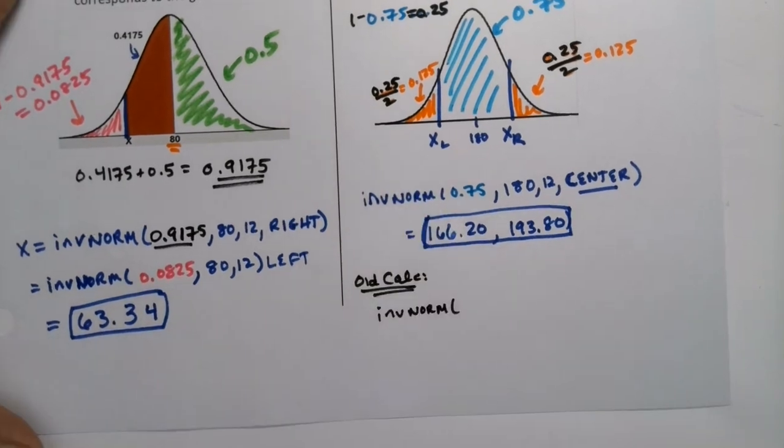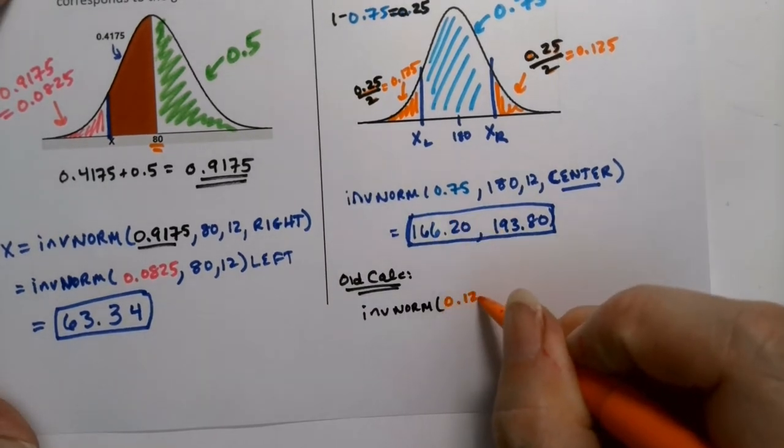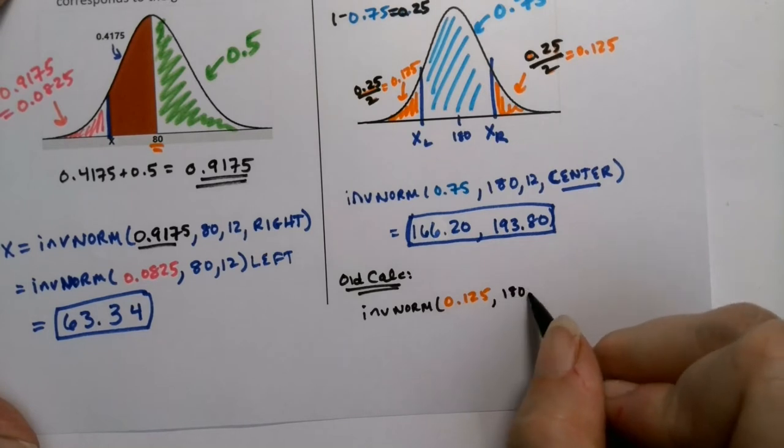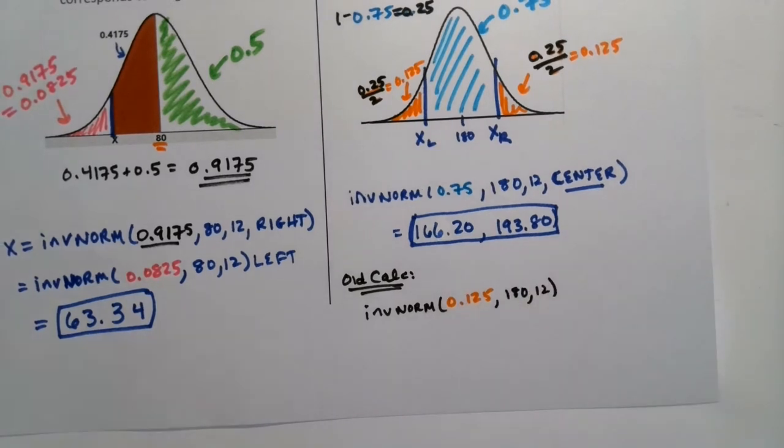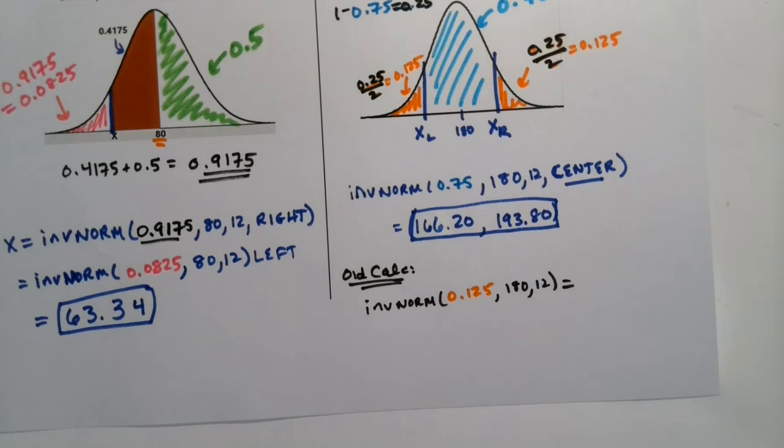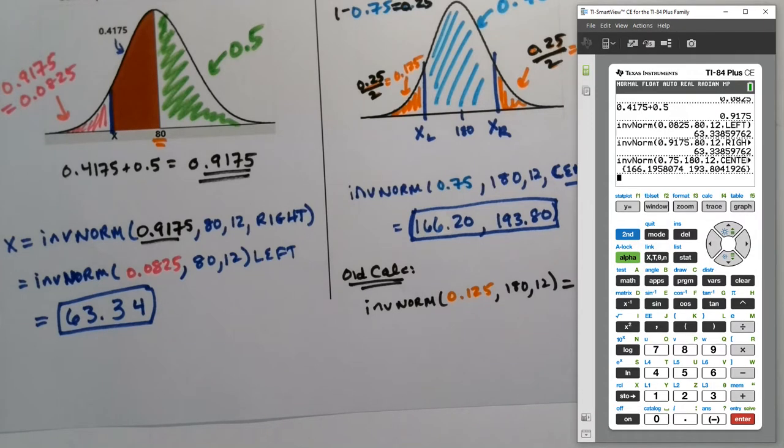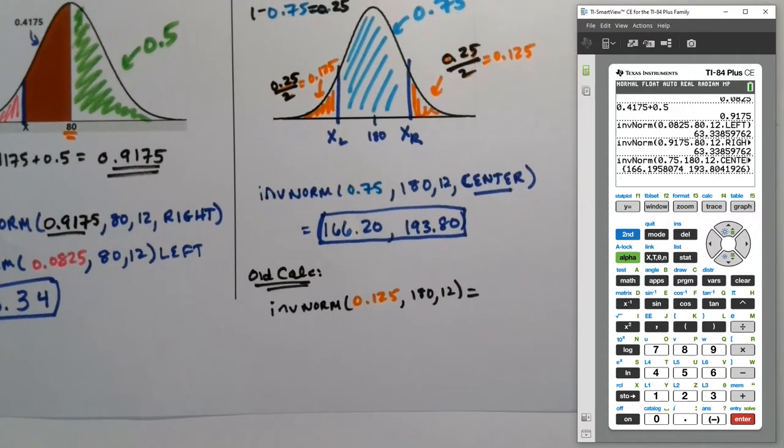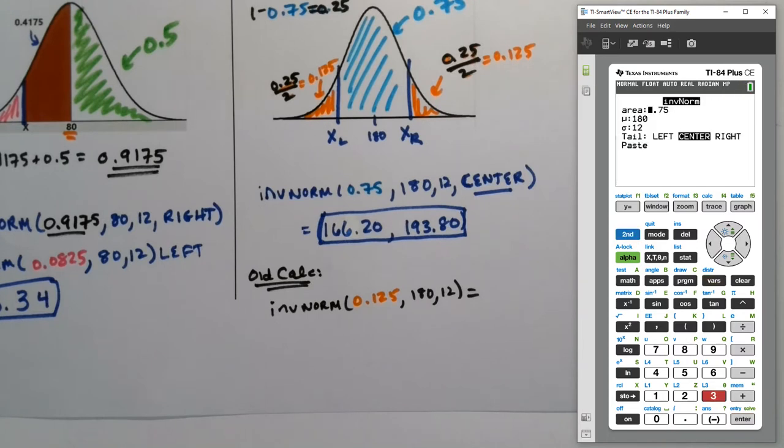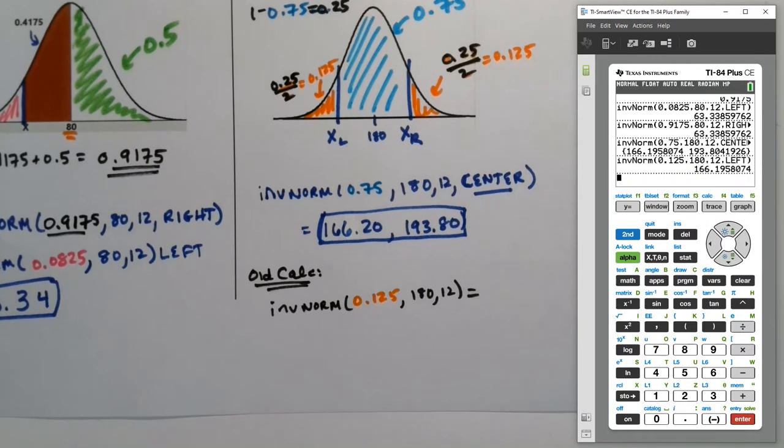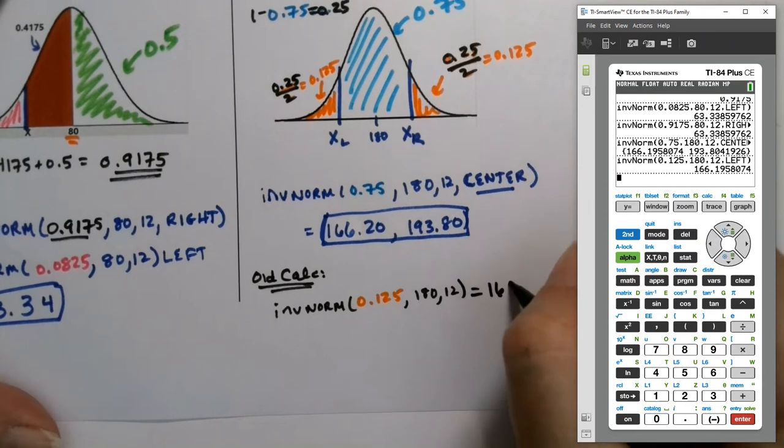You can use inverse norm. To find the one on the left, I can just say 0.125 and then say 180 and 12. No problem because it automatically assumes the left. That'll get you the 166.2. Let me prove it to you. So if I grab second distribution, number three, 0.125, 180 and 12 and choose left. You don't have a choice on an old calculator. I do because old calculators are automatically left. So you can see it's 166.1958, so 196.